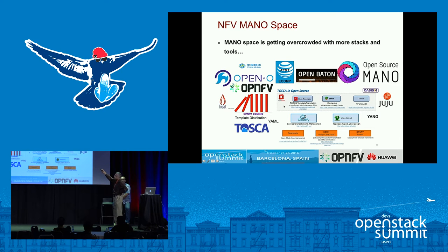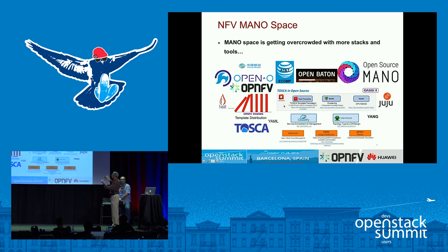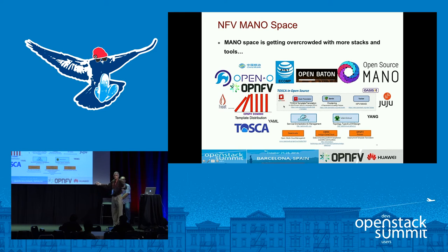The MANO space is crowded. There is Tacker, an OpenStack project for VNF orchestration; Juju, used by Open Source MANO; and OpenO, which wants to use both Juju and Tacker as a VNF manager to build the NFV orchestrator. To build all these, you need some way to describe services. Our pain point is: how do I describe it, and if I have a distributed system, how do I distribute it?